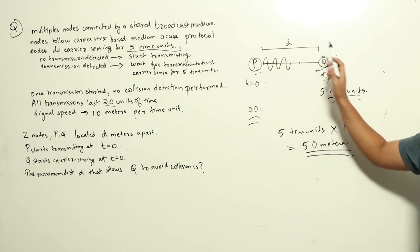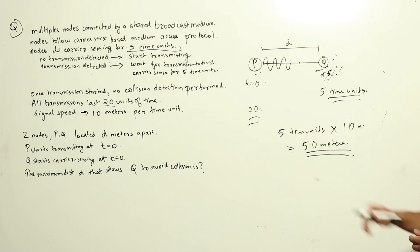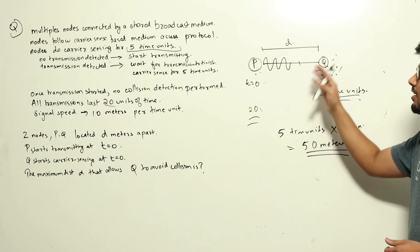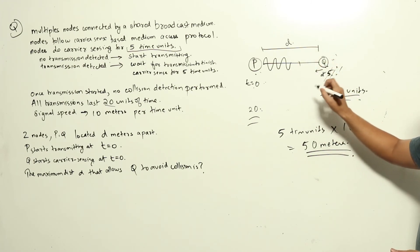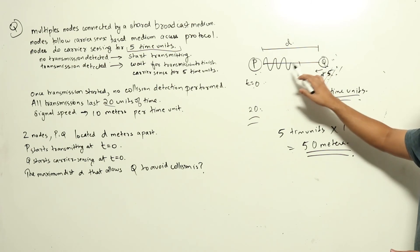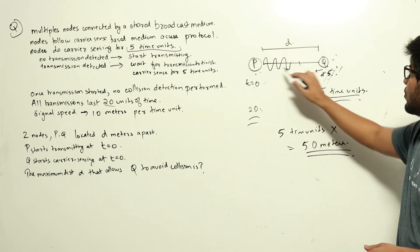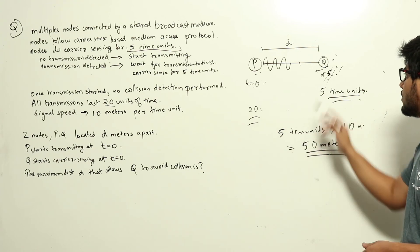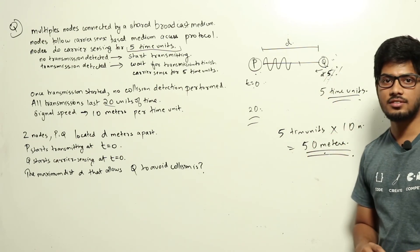If the distance is less than or equal to 50 meters, the signal will reach Q before five time units, Q will detect P's transmission, and there will be no collision. But if the distance is more than 50 meters, the signal won't reach Q in time, Q won't know P is transmitting, Q will start transmitting, and a collision will result. So the answer is 50 meters.